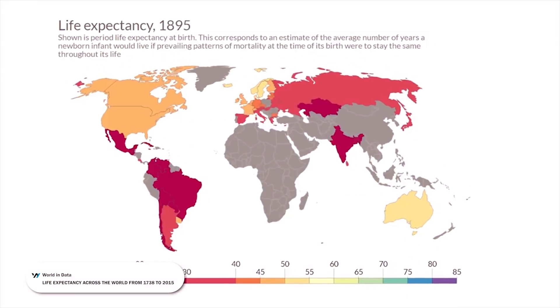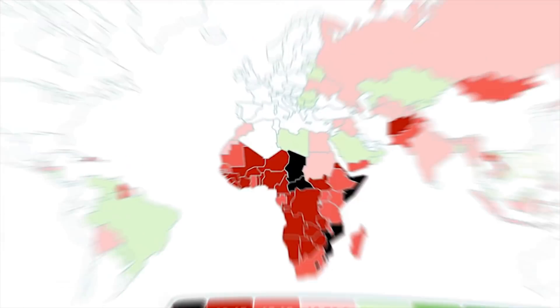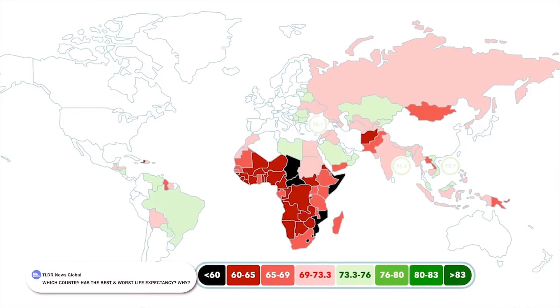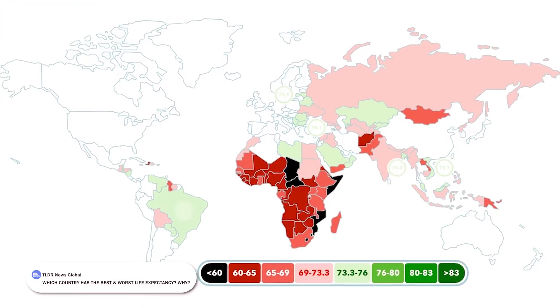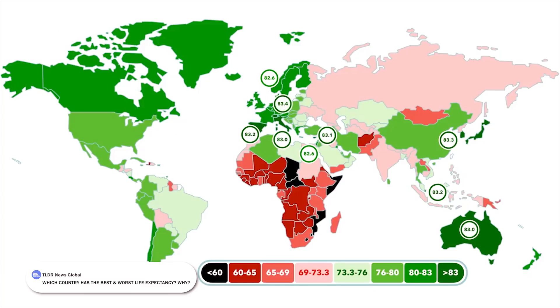Over the past 200 years, the average life expectancy has globally gone from less than 30 years old to above 72 years of age. There are many factors that play a role in explaining this, but one important reason is that our healthcare and technology has improved dramatically.